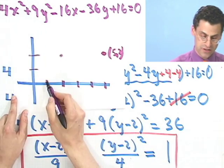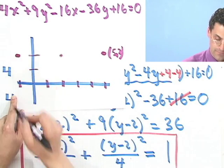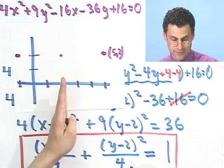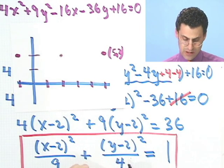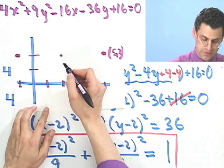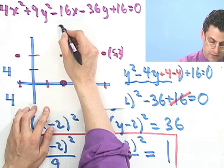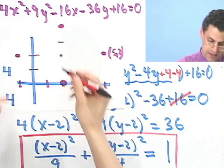And then in the y direction, in the minor axis, I know I go 2 up and 2 down - the square root of this - so 2 down is right along here, 2 up is at 4, and so that complicated awful looking thing actually can be graphed.